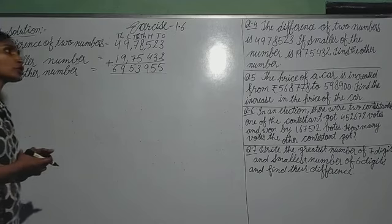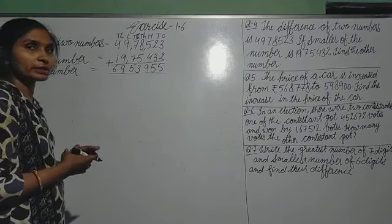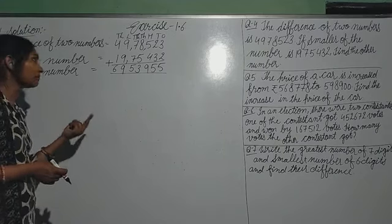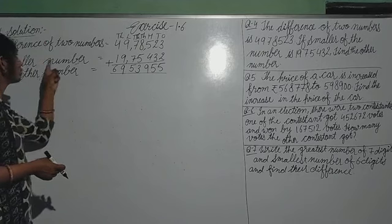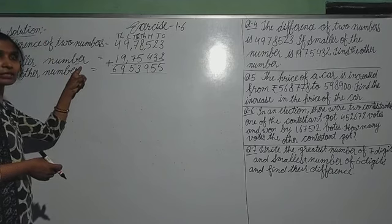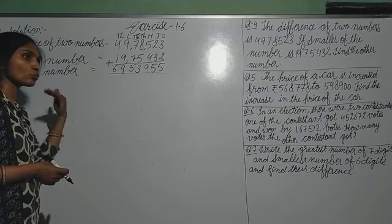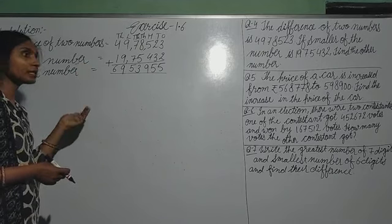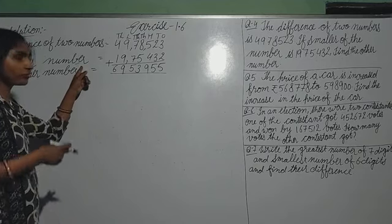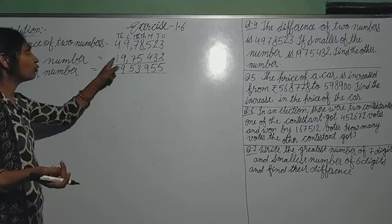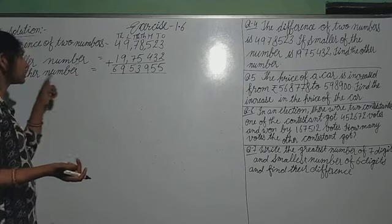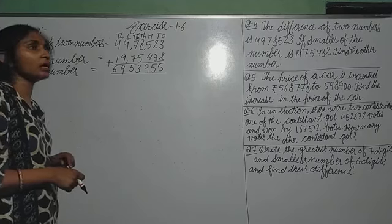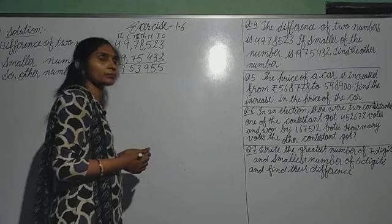Now the next question, question number 6. In question 4, the difference was given and the smaller number was given, so we found the other number by addition. Clear?